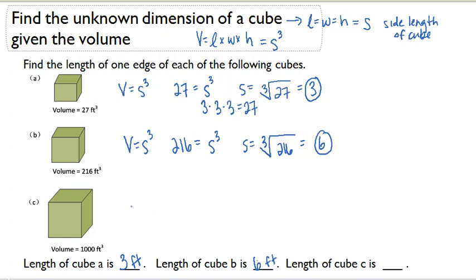Lastly, for part C, we're going to do the same exact process. V equals S cubed. So 1000 equals side cubed. So side equals the cubed root of 1000, which is simply 10. So the length of cube C is 10 feet.